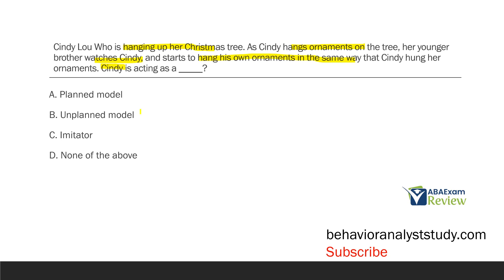Is Cindy a planned model or an unplanned model? A planned model is contrived — similar to thinking about discrete trial teaching versus naturalistic teaching. In this case, Cindy isn't necessarily meaning to act as a model. It's not like the information says Cindy set herself up as a model. All we know is as Cindy hangs the ornaments, her brother watches her and then proceeds to hang his own ornaments. It just so happens she becomes a model for her brother. It's very natural — Cindy is hanging the ornaments and her brother watches and imitates. So Cindy is acting as B, an unplanned model.